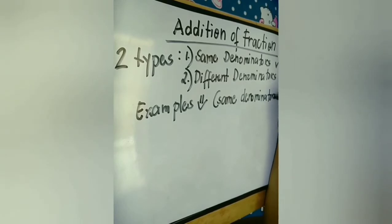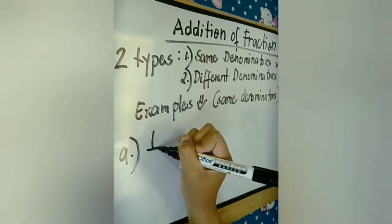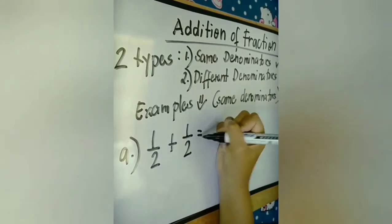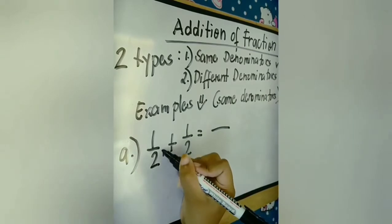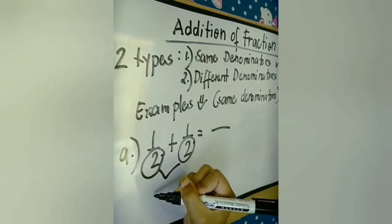So now we will tackle addition of fraction with the same denominators. Let's have examples. Example letter A is 1 half plus 1 half. So, 1 half plus 1 half, since both denominators are the same, what we're gonna do is just copy.